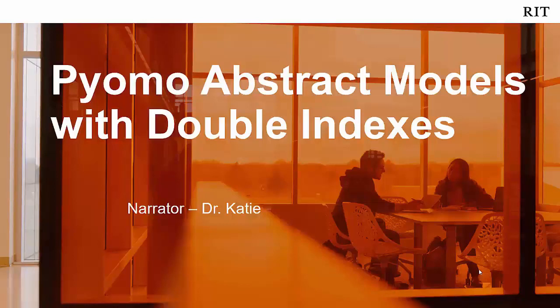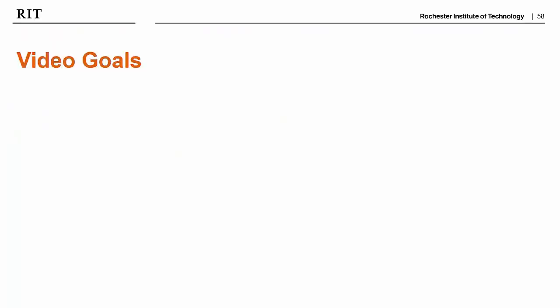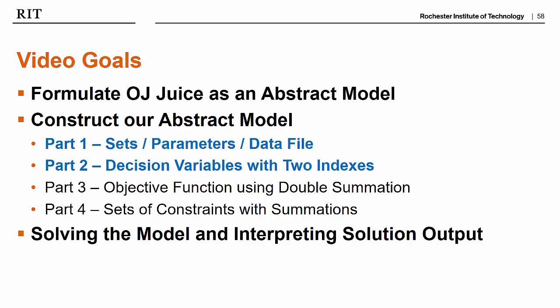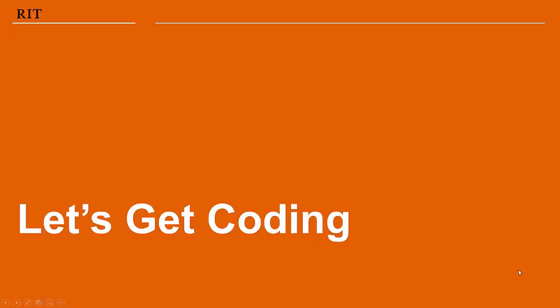Welcome back to our second video on abstract models — abstract models part two — where today we're looking at models that use double indices and summation signs. If you watched the previous video, we went over how to formulate our orange juice problem as an abstract model. These next few videos cover coding that into Pyomo. Our video goals for this particular video are to look at formulating the sets, parameters, and data file, and then also formulating the decision variables. Let's get coding.